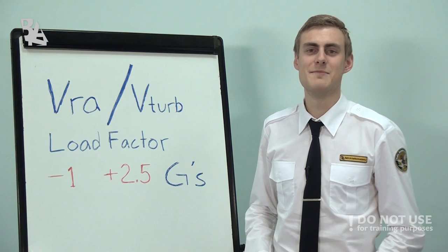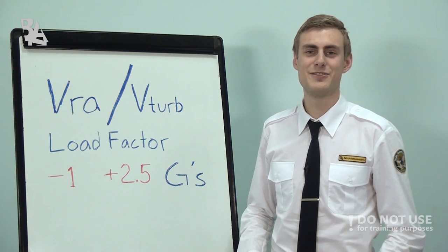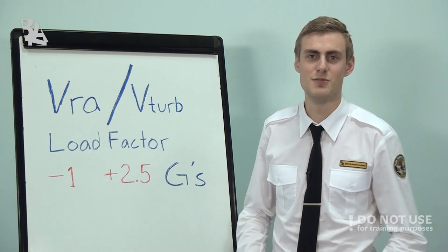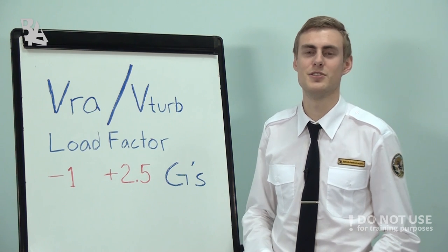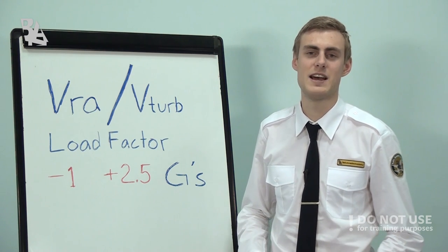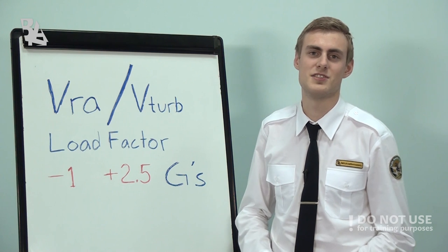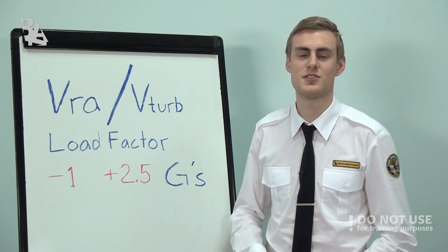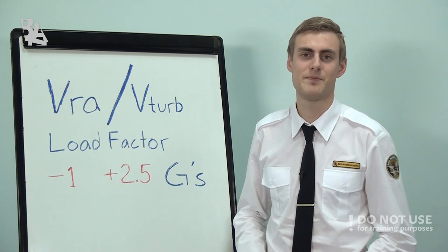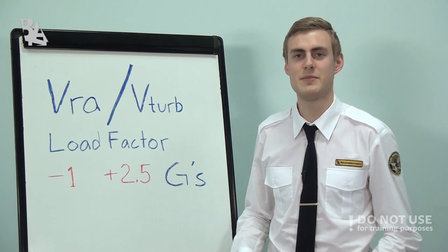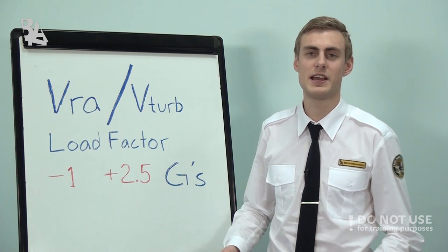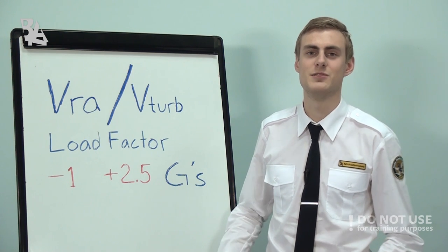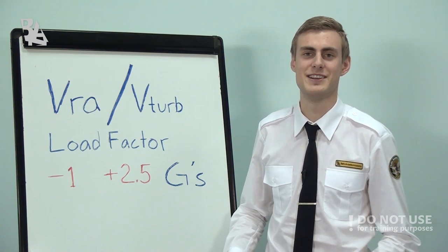Severe turbulence may make your load factor go uneven from positive to negative. You may want to notify the cabin crew and the passengers if you suspect turbulence, and also secure the cabin and the flight deck. Climbing, descending, and banking should be reduced. We will also show this in the simulator.